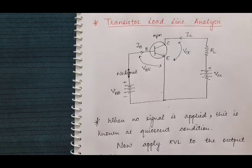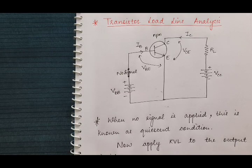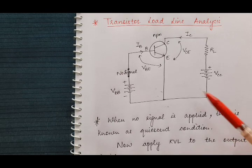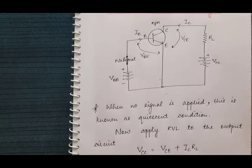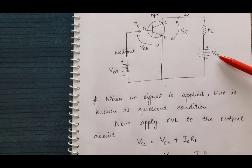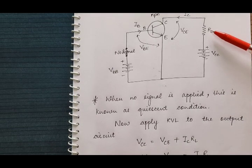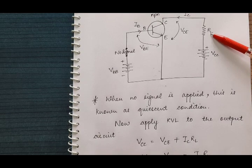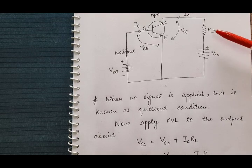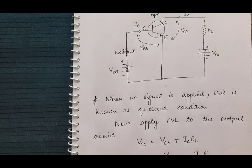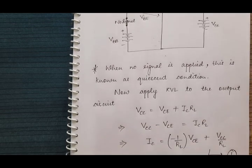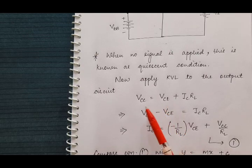Now, to draw the transistor load line, we will apply Kirchhoff's voltage law on this output circuit. According to Kirchhoff's voltage law, VCC will be equal to IC — the current flowing through this load resistance RL. So VCC will be equal to IC·RL plus output voltage VCE. And find the value of IC from this equation by moving VCE to the other side.